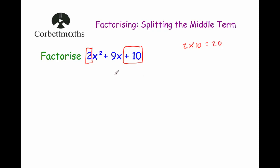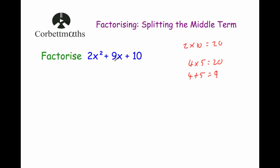The second step is to look at the coefficient of x, which is positive 9. We're going to look for the two numbers which multiply together to give you that 20 and add together to give you 9. The two numbers that multiply together to give you 20 and add together to give you 9 will be 4 and 5, because 4 times 5 is equal to 20 and 4 plus 5 is equal to 9. So the middle term is 9x and we're going to split it up into a 4x and a 5x: 2x squared plus 4x plus 5x plus 10.